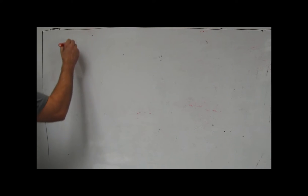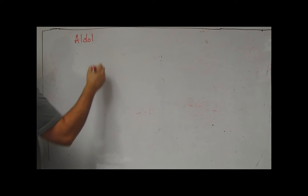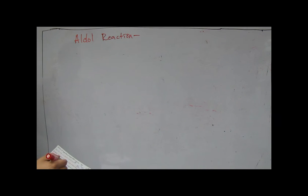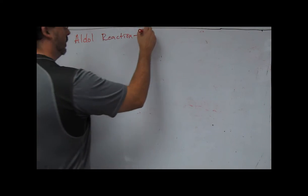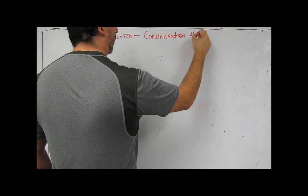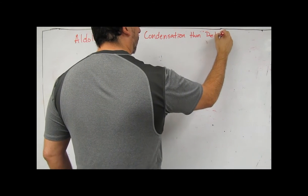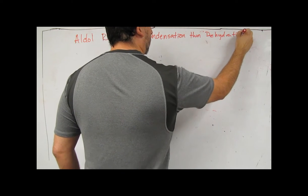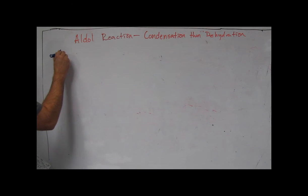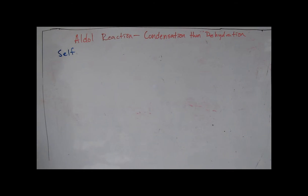The aldol reaction is classified as a condensation and then a subsequent dehydration. We're going to look first at the self-condensation. As we've seen with the Claisen condensation, which is used with esters, now we're going to look at aldehydes or ketones undergoing self-condensation.